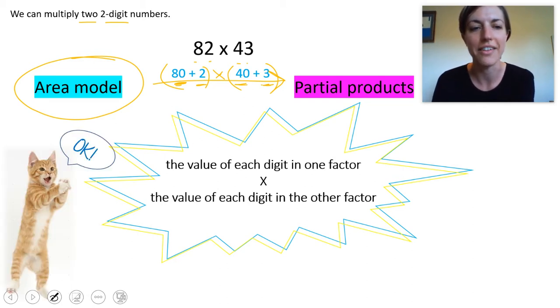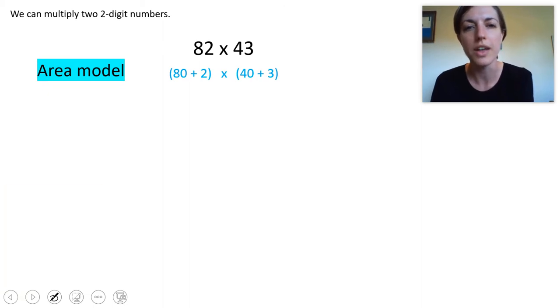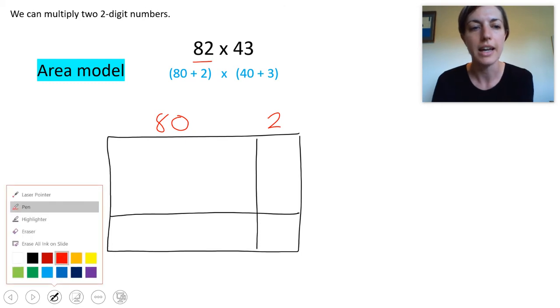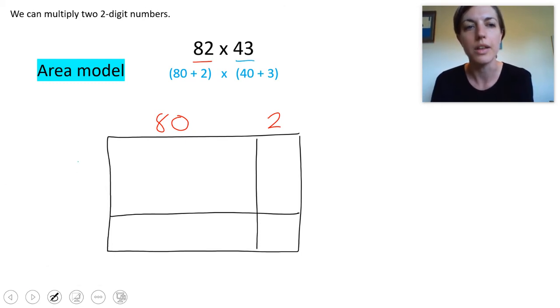Let's look at the area model and see how this pans out. So we know that to find the area of a rectangle you multiply the length times the width. Well we can use that to also represent our math problem. So I'm going to draw this model here and label it with the length and width of our numbers essentially. So on the length we'll label it 82 and use that expanded form labeling 80 and 2. And then on the width we'll label 40 and 3.